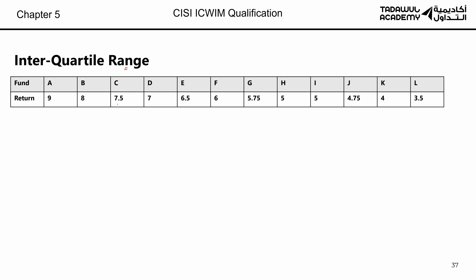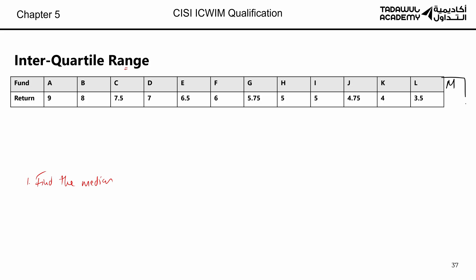Let's repeat the calculation from scratch. Step 1: find the median. We have 12 funds originally, but we add fund M to get 13 — an odd number. The median of these 13 funds is simply the number in the middle: G, with a return of 5.75. G splits the data into two halves — funds A to F (six investments) on one side and funds H to M (six investments) on the other.